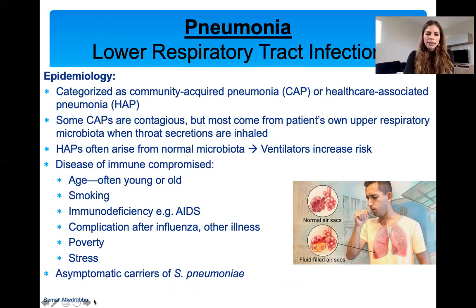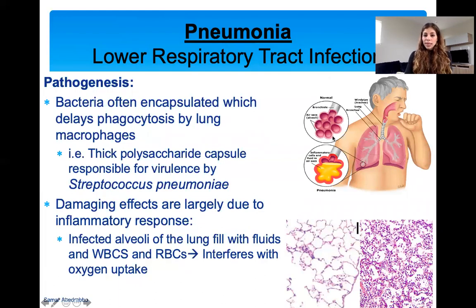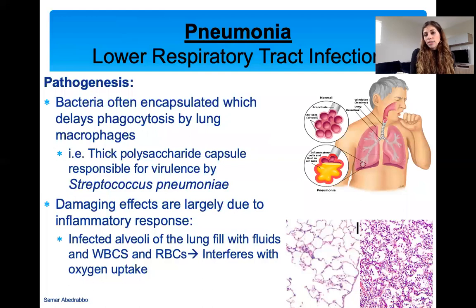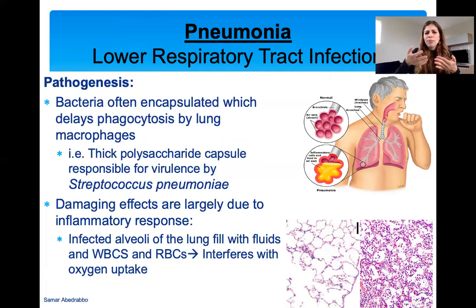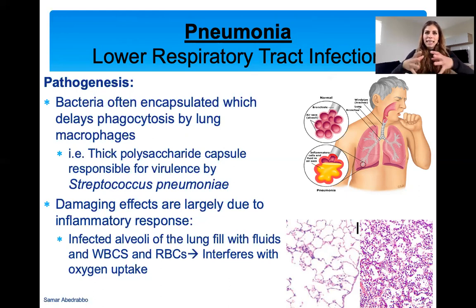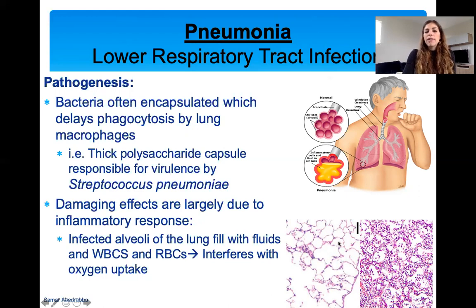Pathogenesis: bacteria that cause pneumonia often have capsules. The capsule makes phagocytosis slow because it's harder for macrophages to recognize the bacteria — the capsule protects them. This makes it very hard for your immune system to fight. You get so much inflammation as the body tries to fight the infection, and it's that inflammation that brings in fluid — your body is trying to fight, but also hurting itself. The alveoli fill with fluids, white blood cells, and red blood cells, making it very hard to breathe.